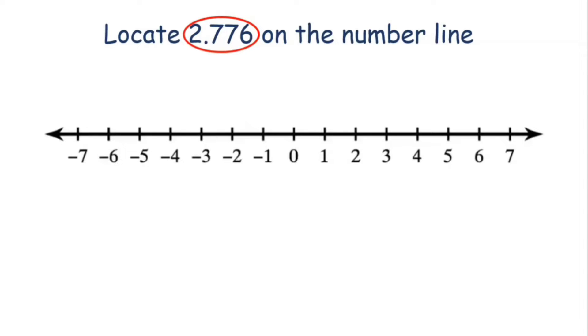This 2.776 is a terminating decimal and it lies between 2 and 3, as it is having 2 point some digits after that. So definitely it lies between 2 and 3. So look closely at the portion of this number line between 2 and 3.